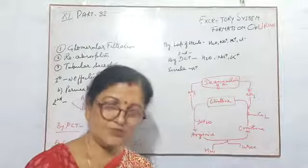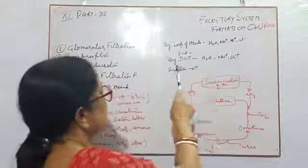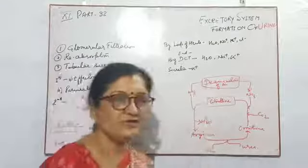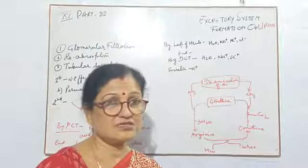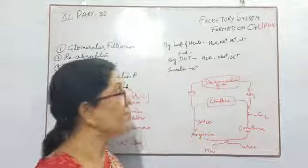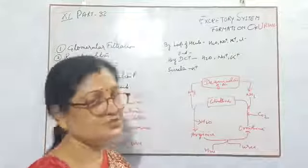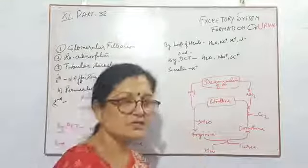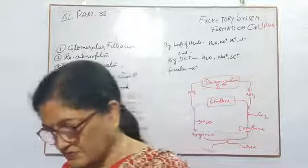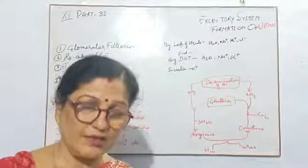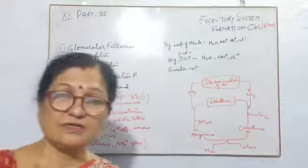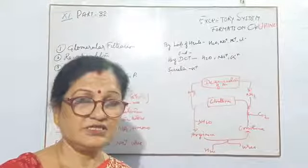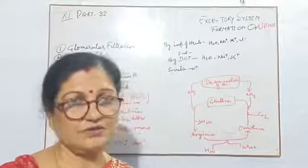In the DCT, the remaining water that the body needs is absorbed to maintain blood concentration. Sodium ion and potassium ion are also reabsorbed. After reabsorption, to maintain ionic balance, potassium ion is again secreted back. In this way, urine is formed properly, and all materials that should be passed from the body are secreted up to the last part of the DCT, completing the formation of urine.